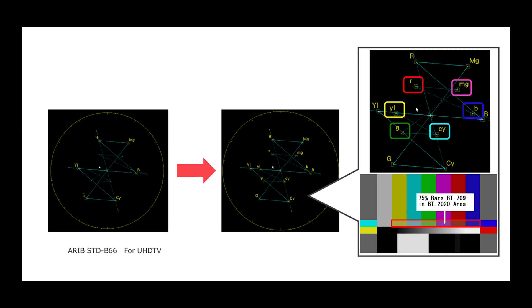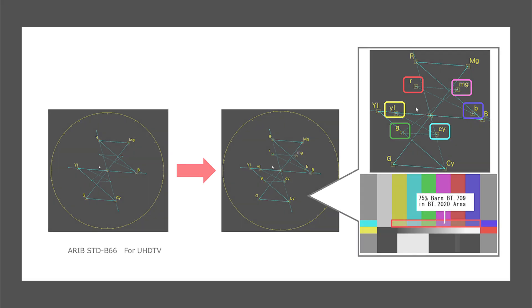This has resulted in ARIB publishing a new color bars test pattern that supports both REC 709 and 2020. The Leader Zen series supports display of both the ARIB STD-B66 and STD-B72 markers on the vectorscope graticule.